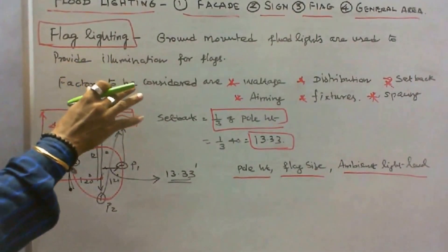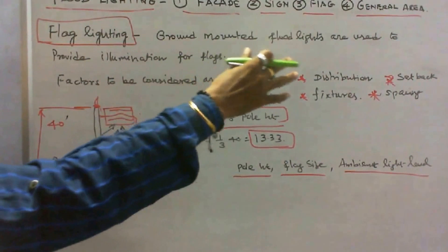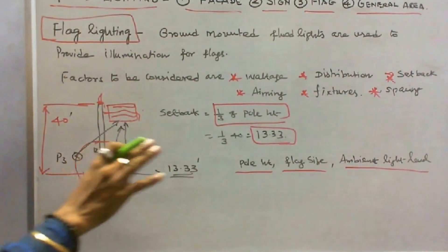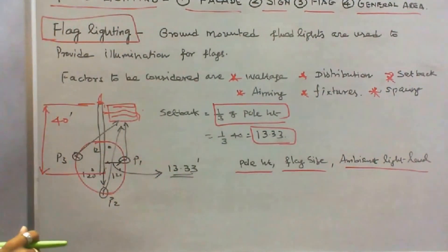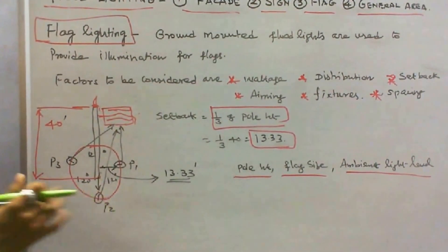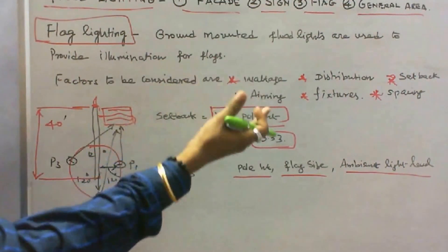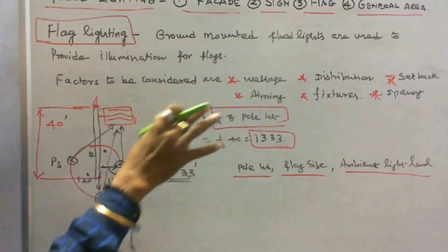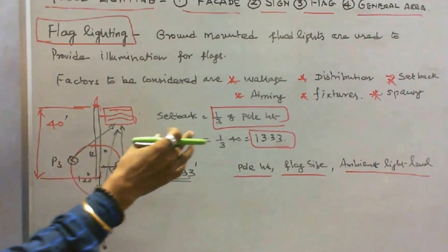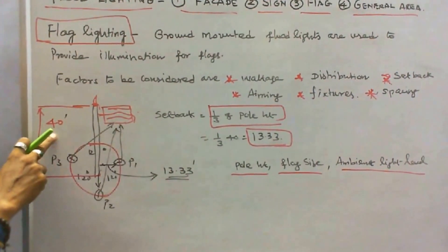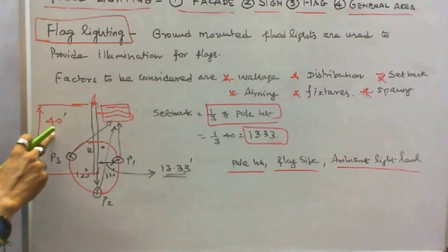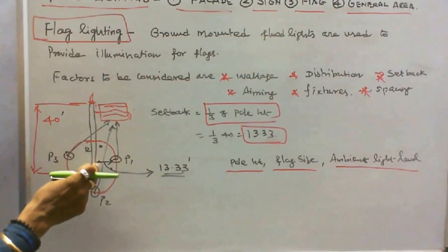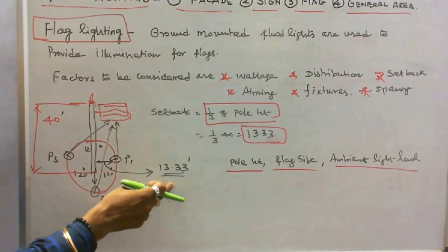The third type is flag lighting. Ground-mounted floodlights are used to provide illumination for flags. The factors to be considered are: number one, wattage of the lamp; number two, light distribution; number three, setback distance. Setback distance equals the height of the pole divided by 3. If the pole height is 40 feet, then 40 divided by 3 equals 13.33 feet — that is the distance between the pole and the projector.